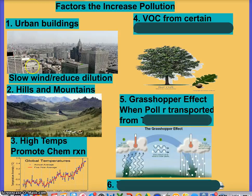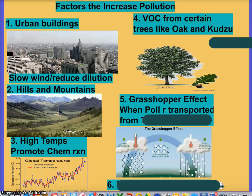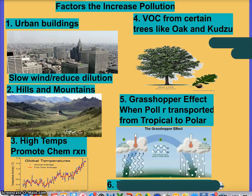High temperatures promote chemical reactions. Volatile organic compounds from plant life are also a factor. And then there's the grasshopper effect — when a pollutant is transported from tropical to polar regions, that's called the grasshopper effect.